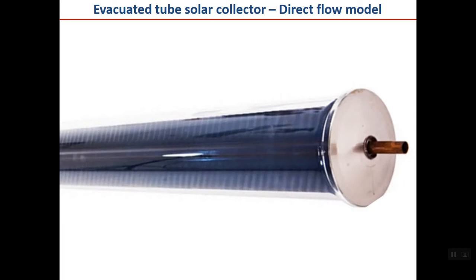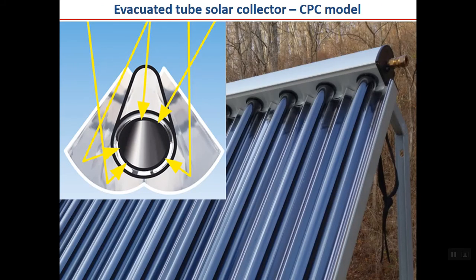The direct flow model uses the same double glass vacuum tube, but here a copper tube is positioned so that cooled fluid enters, flows to the bottom, distributes around the pipe in contact with the hot inner tube, and exits as hot water. Another variant is the CPC model, which includes a reflector at the back. When sunlight hits the tube, it also reflects off the mirror, increasing the fluid temperature. CPC collectors concentrate sunlight to some degree but generally do not require a tracking system.